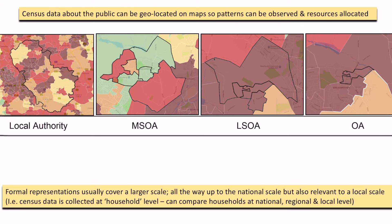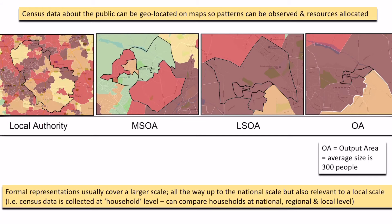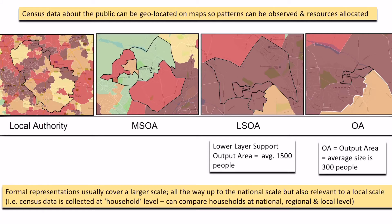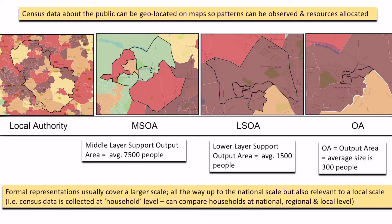Formal representations allow us to look at data at a larger scale. Because it's collected officially by the government, I can look at it at a national scale and compare households across a whole country, but also drill down to a local or household level. Census data is collected at the household level — we look at individual households in terms of income, health, and education, and compare them across an area, region, and nation. In terms of census areas: the output area is the smallest, averaging around 300 people; the lower layer super output area has nearly 1,500 people; and the middle layer super output area has close to 7,500 people. This means formal representations can be applied to maps and examined at different levels — much better for a variety of scales than an informal representation.